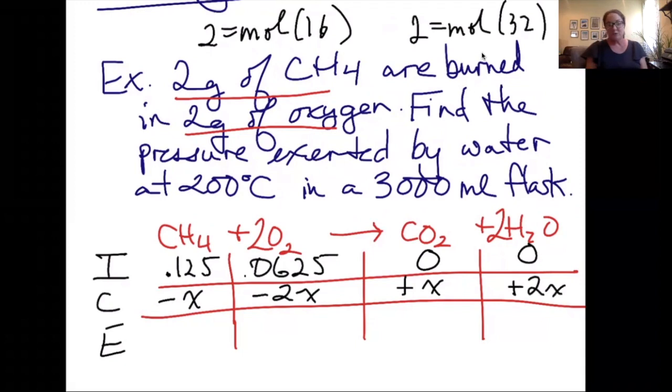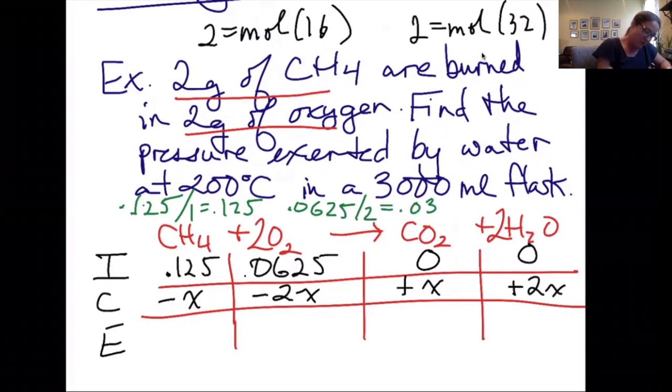The next thing I need to do is decide which reactant is limiting. The way that I like to do that is I divide each one's moles by its coefficient. So 0.125 divided by 1 equals 0.125. 0.0625 divided by 2 equals 0.03125. Whichever one's smaller is what's limiting. I therefore know that this becomes 0 at the end.